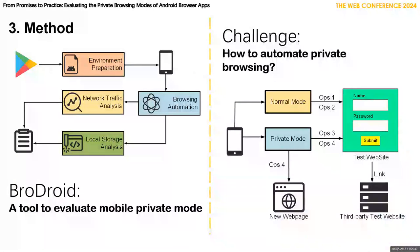To detect whether browsers followed these rules, we designed an automated analysis tool called Brodroid. At a high level, Brodroid treats the private browsing implementations of the browsers as black boxes and checks whether browsers achieve their private browsing goals. To meet the needs of large-scale analysis, we designed an automated browsing process.